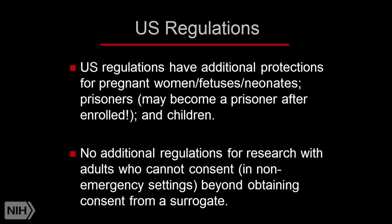The important point for today is that right now there are no additional protections for people like Ms. P — no additional protections for non-emergency research with adults who can't give informed consent beyond getting the permission or agreement of an appropriate surrogate, what's called in the regulations a legally authorized representative, or LAR.